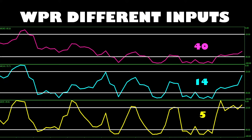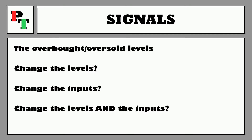It's all about how you use them. If changing the levels or the inputs individually doesn't work for you, what about changing both? There are so many combinations out there to be tested that you could spend an entire lifetime studying the Williams Percent Range, trying to attain the perfect levels and inputs across all assets and timeframes.